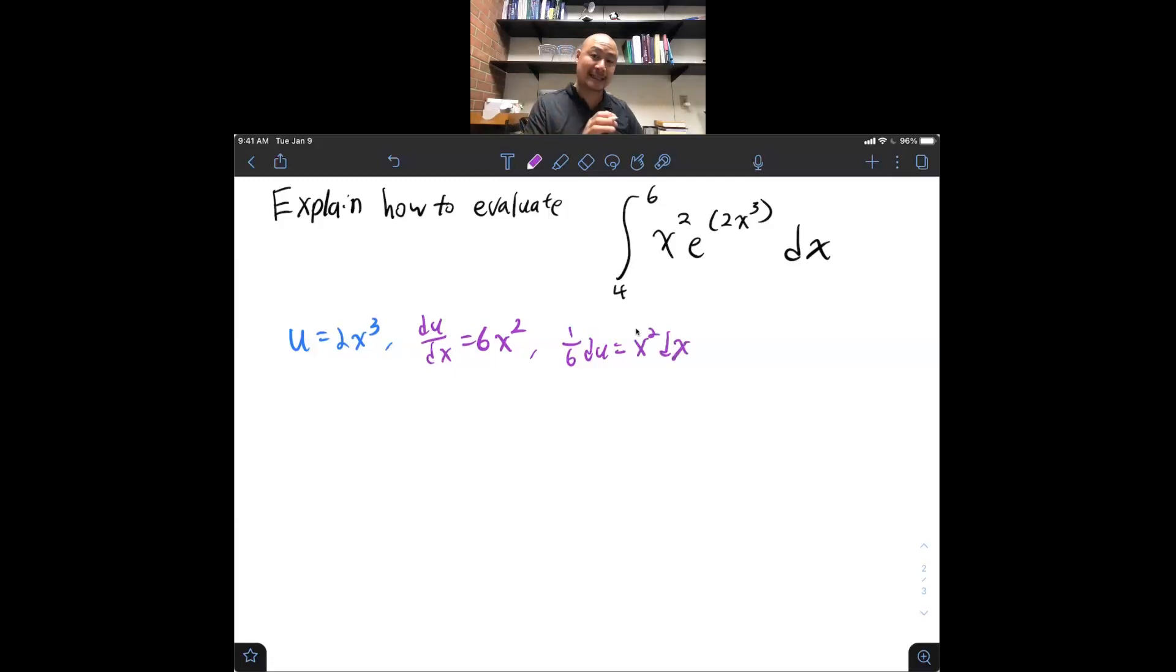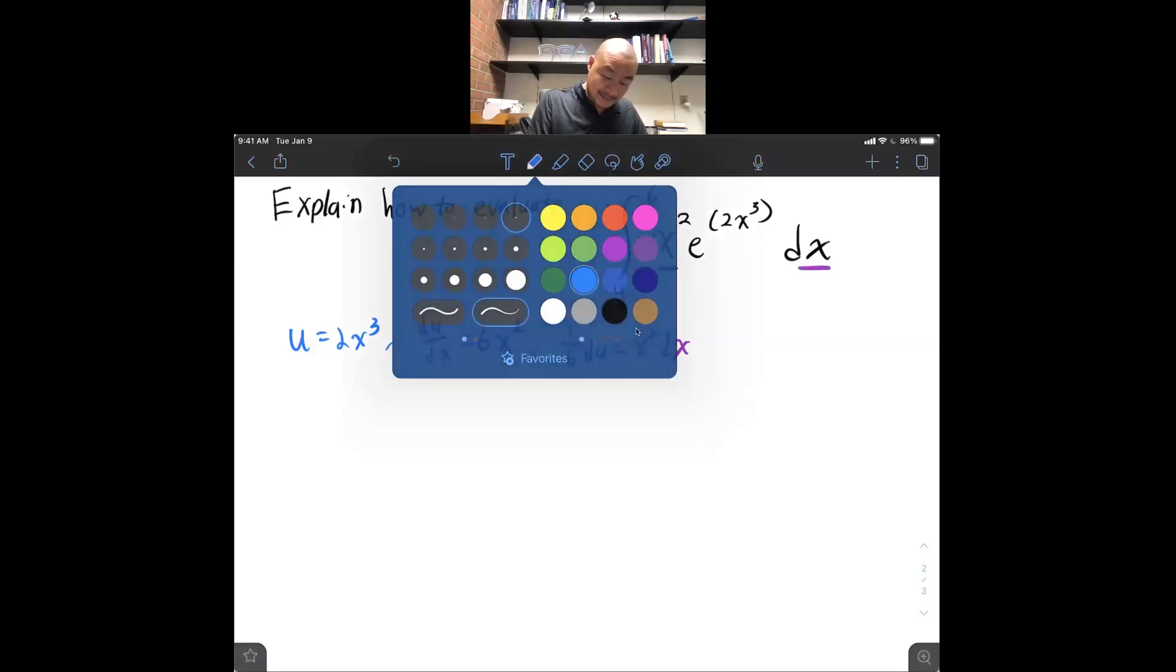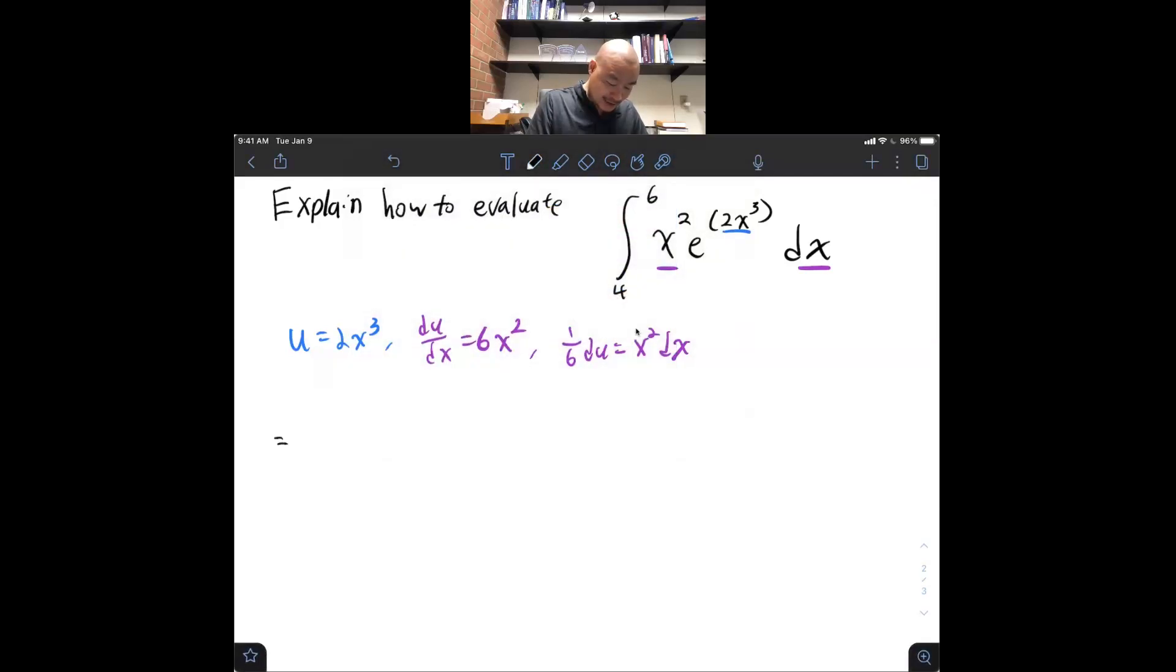Now, I do have an x squared and a dx, as we noted. And so, I have x squared and dx, I have u, and so, I can rewrite this expression as an integral from x equals 4, x equals 6. Remember, because we've changed from x's to u's, our same bounds probably don't work. So, we want to specify that whatever these bounds were, they were in terms of x, not in terms of u. Then, I have my e to the u du.